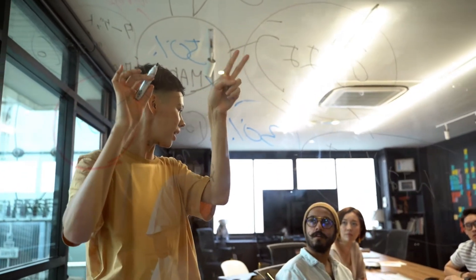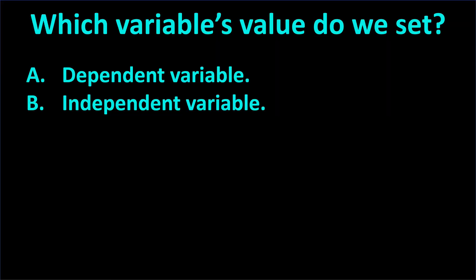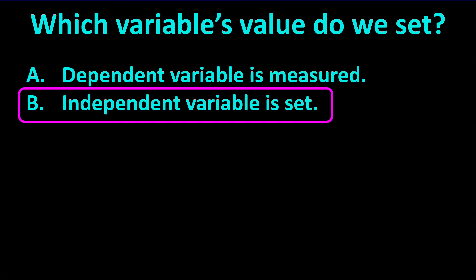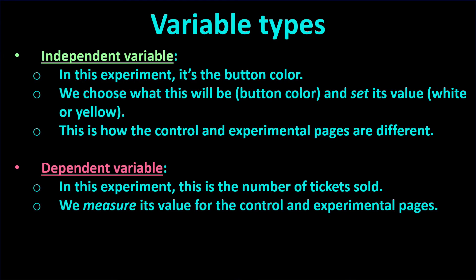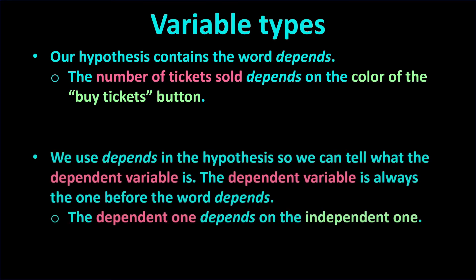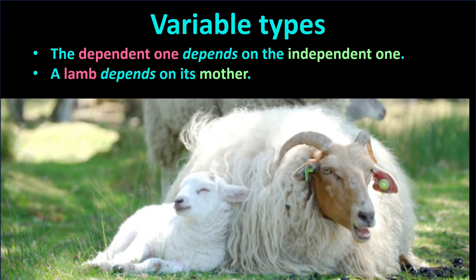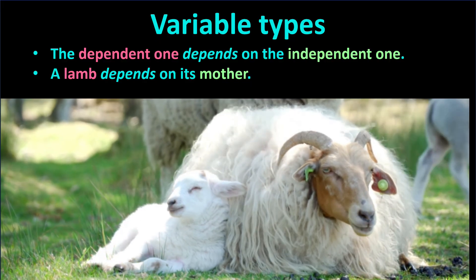For the rest of this video, we will review variable definitions. These are often confusing when we are new to research, but we need to know the correct names for more advanced research and for test questions. We set the value of the independent variable — in this case, white or yellow. The dependent variable is the one we measure — in this case, the number of tickets sold. The controlled variables are everything else and should be the same between the control and experimental groups. The hypothesis contains the word 'depends,' and the dependent variable always comes before that word. One way to remember this is to think of a lamb and its mother — the dependent variable comes first, just as a lamb depends on its mother.